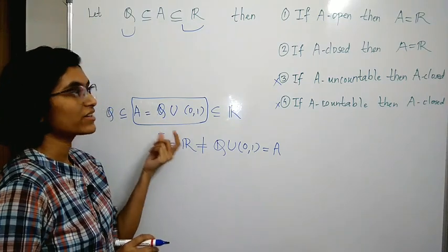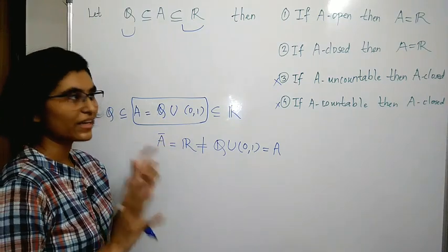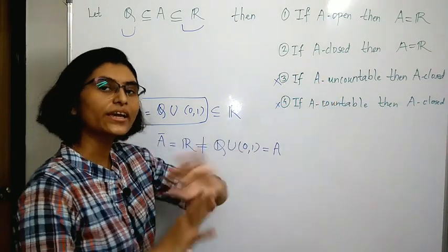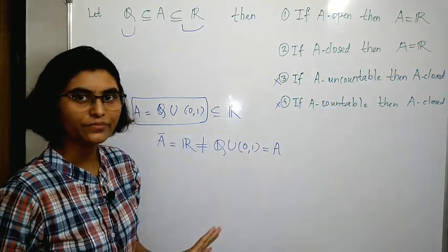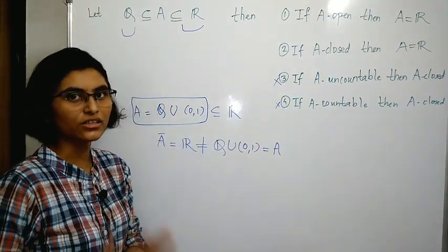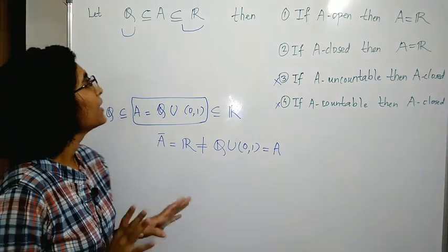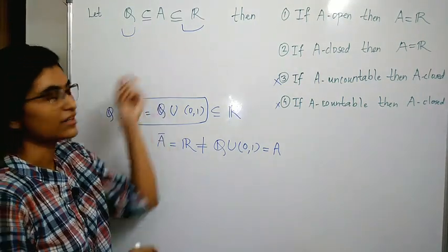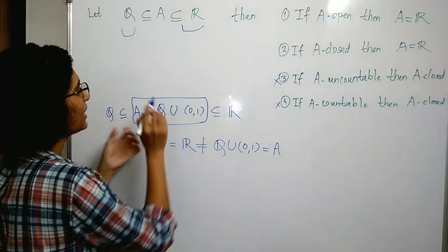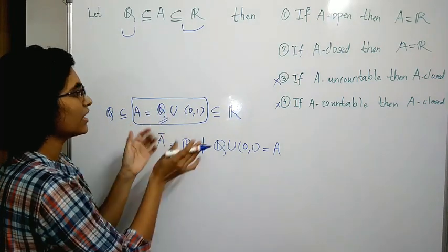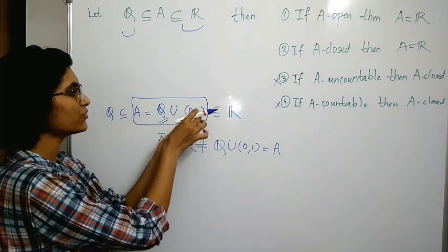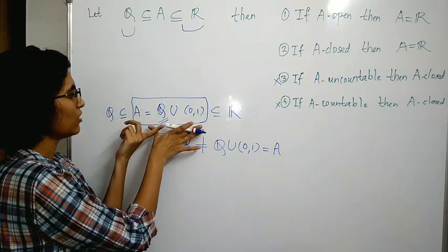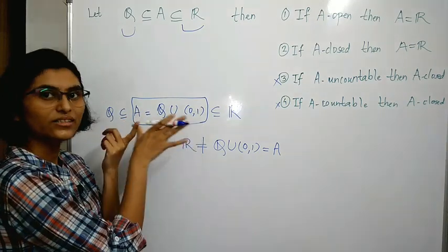I constructed this A as follows: since we want A uncountable, we take any interval, as an interval is uncountable. I also need Q to be a subset of A, so I included Q and took its union with this uncountable interval. That is how A was constructed.